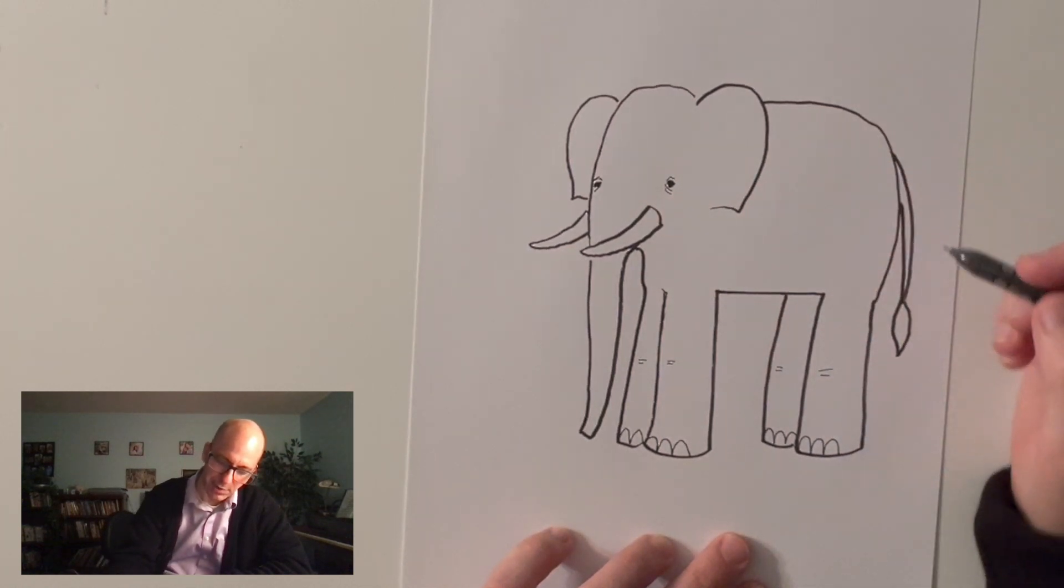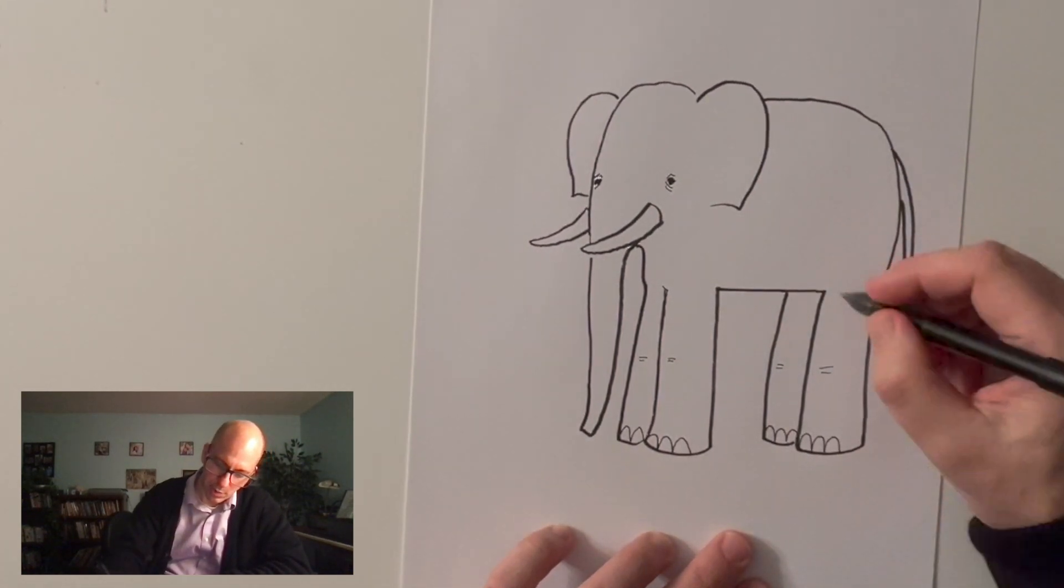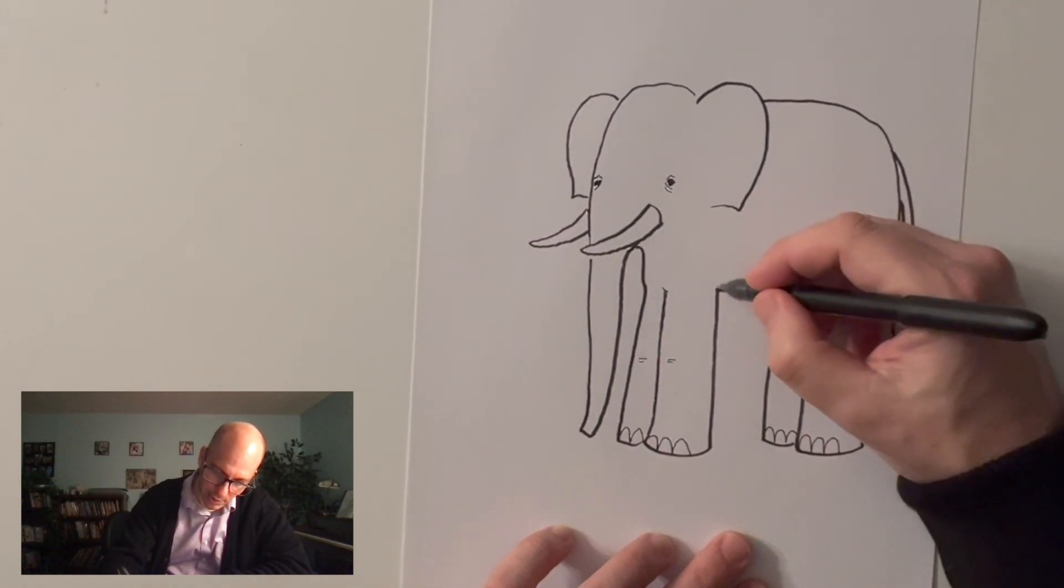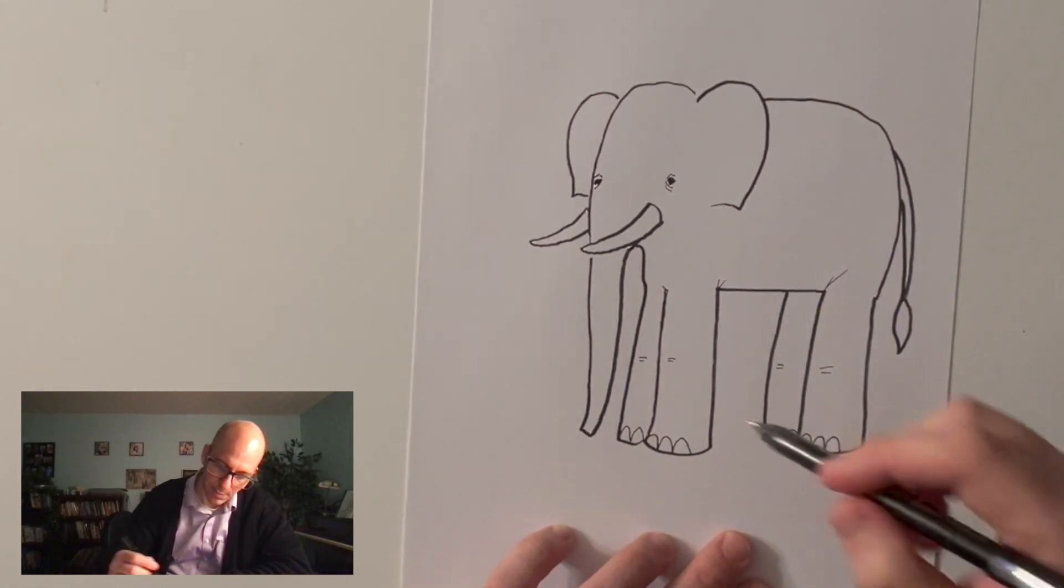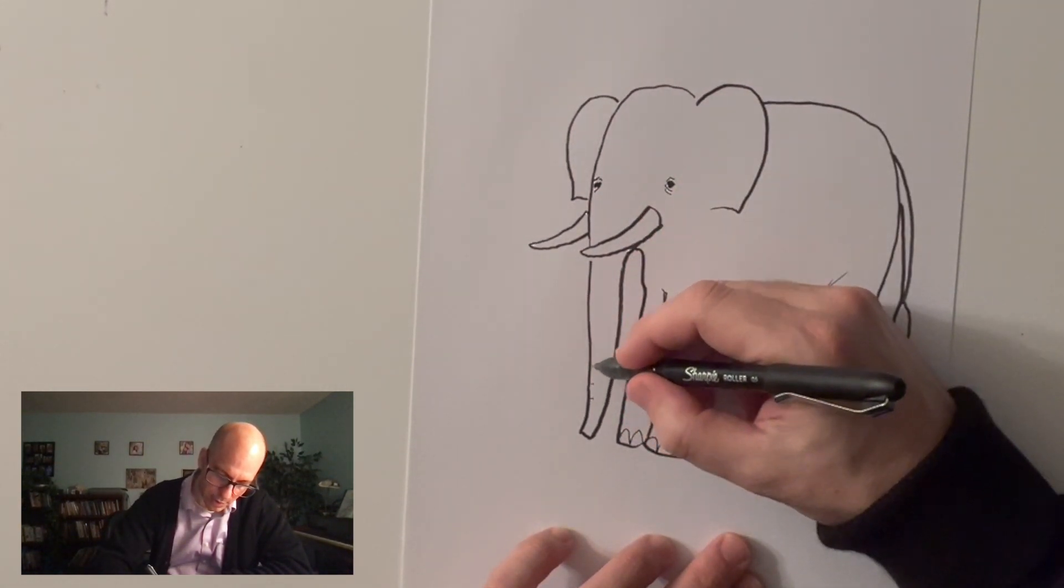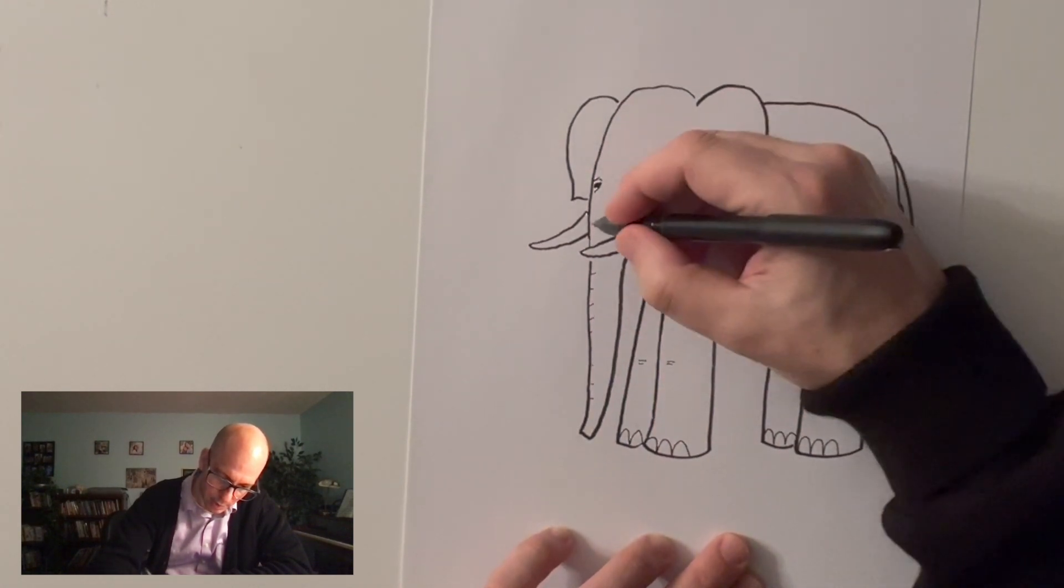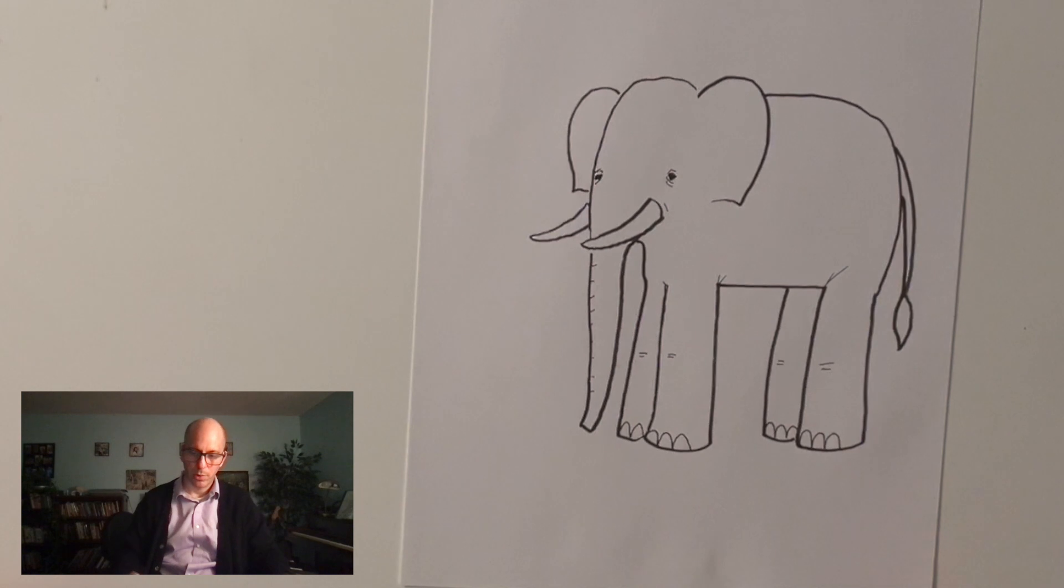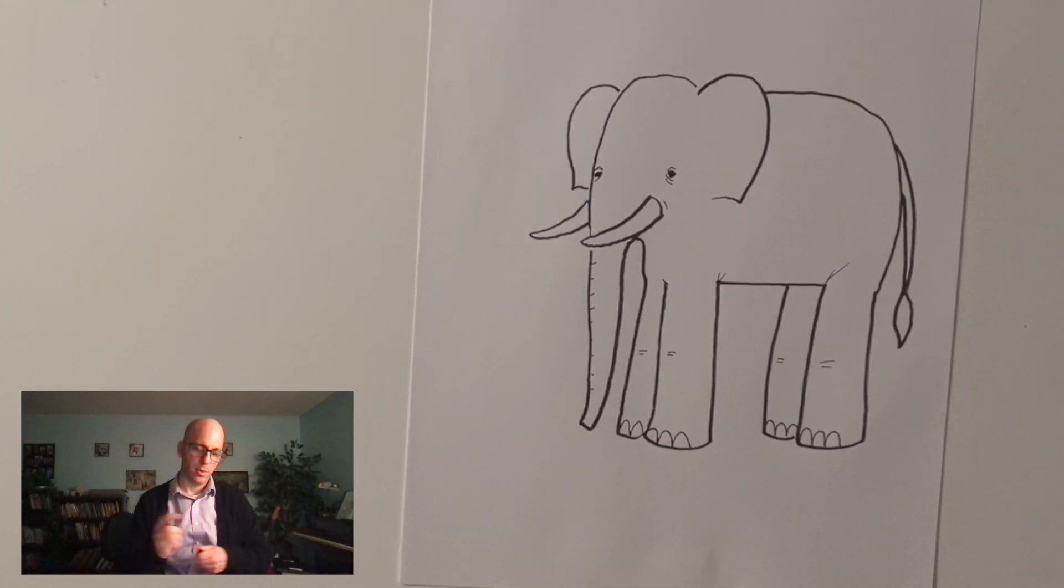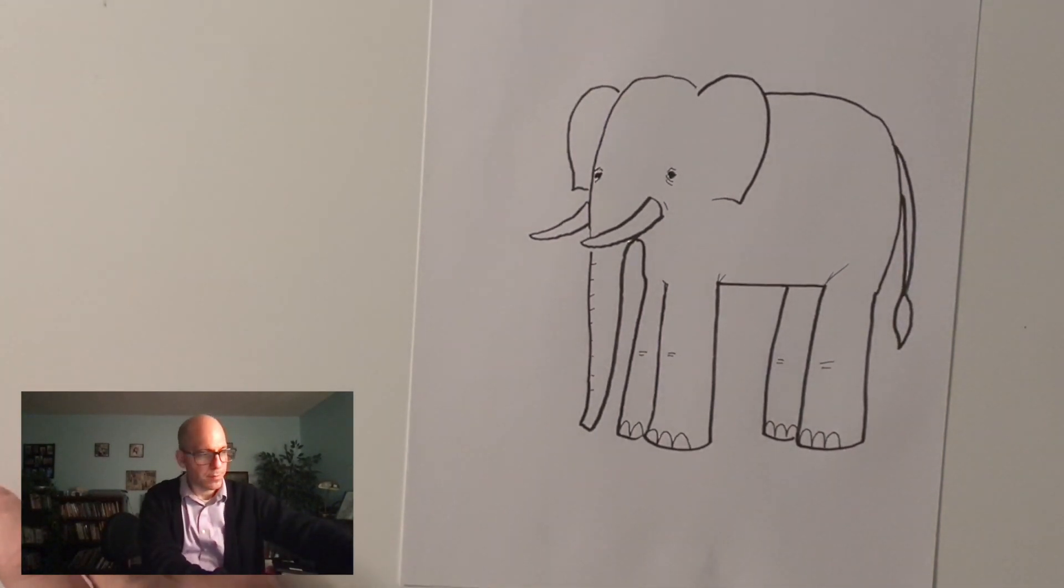Elephants are really wrinkly, so just adding a couple lines here and there can help kind of create that wrinkled look. I like to put a couple wrinkles on the nose and on the trunk. That helps out a little bit. But really, it doesn't take too much. So like I said, keep it simple. And you make a pretty good elephant if you do it that way.